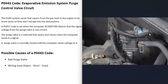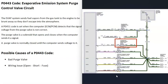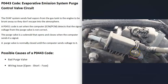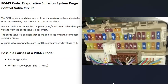The next thing that could cause this code is the wiring going to the purge valve. If there's any kind of issue with the wiring — an open, a short, a blown fuse, something like that — that's going to be an issue. If you go to test the wiring, be sure to get a schematic for your particular vehicle to know for sure what's going on — what voltages are going to it and different things like this. It is very common for 12 volts to go to these solenoids, but be sure to get schematics to confirm. If you have a multimeter and schematics, test that you're getting voltage to it and a good ground.